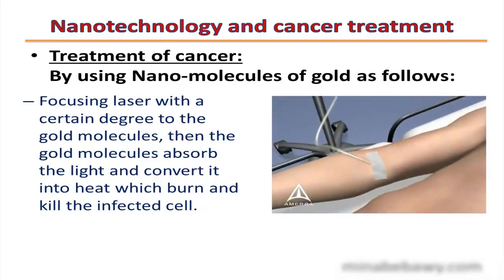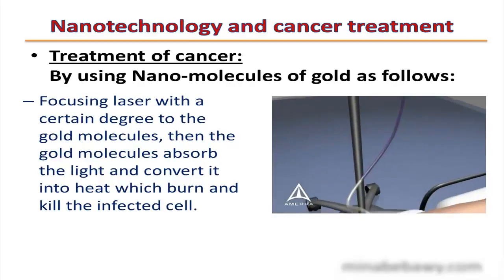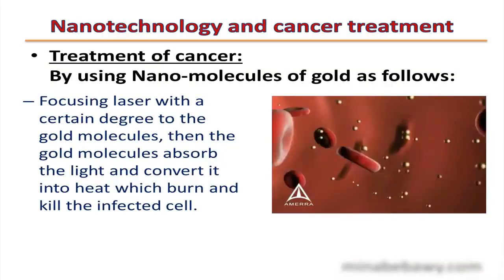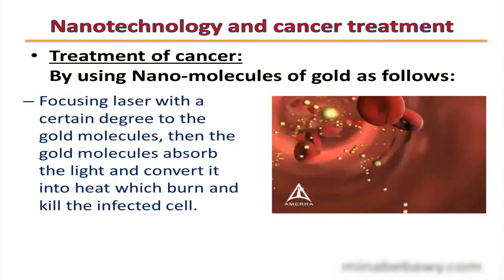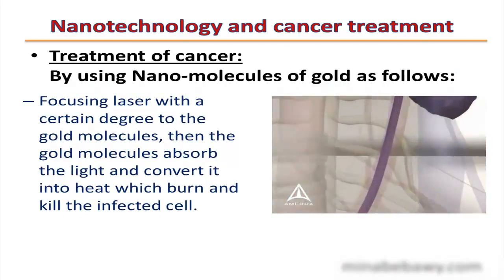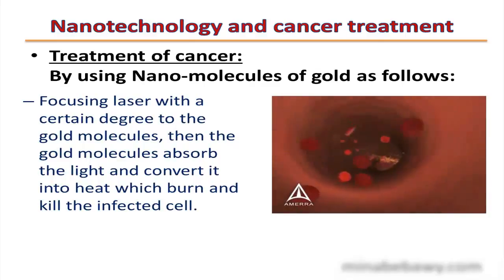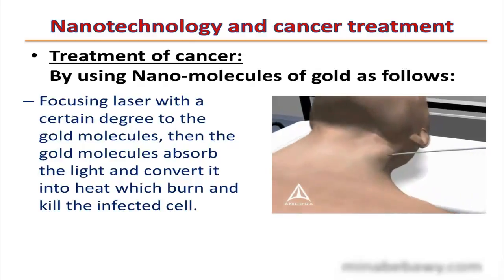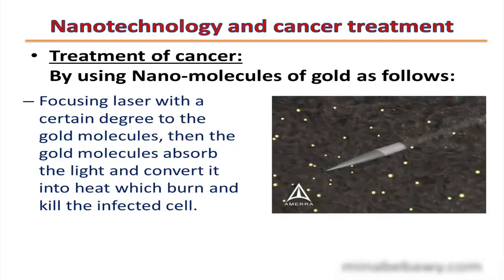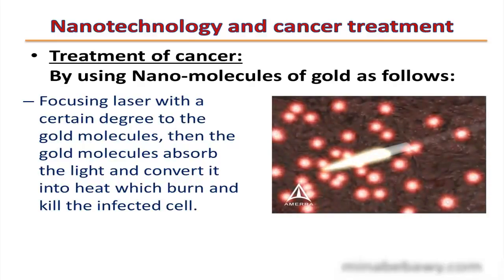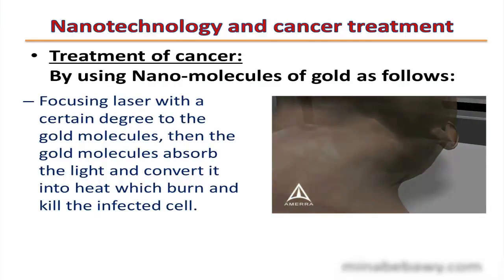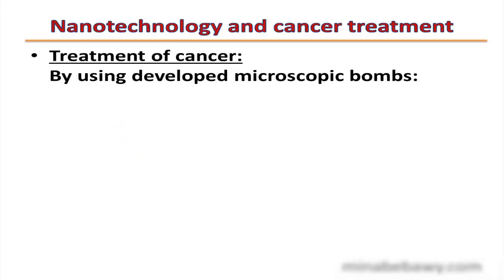We can also treat cancerous cells using nanotechnology. This is done by focusing a laser at a certain wavelength onto the gold molecules. The gold molecules absorb the light and convert it into heat, which burns and kills the infected cell. As you can see in this video, the gold particles move with the bloodstream to the cancerous tumor, and the laser beam causes the gold molecules to absorb the heat energy, leading to the death of the cancerous cells.